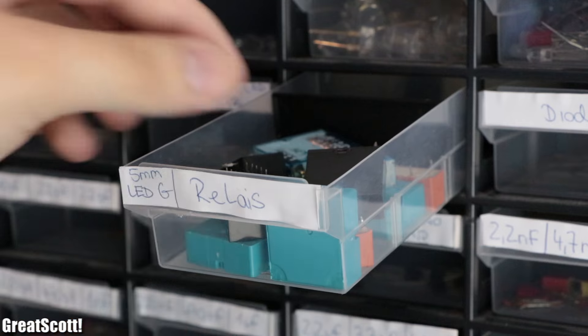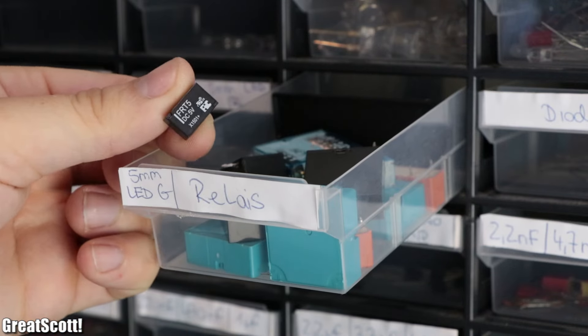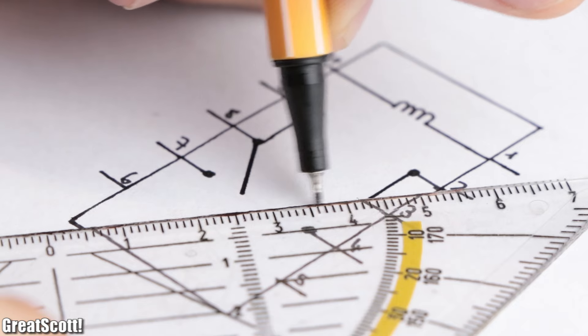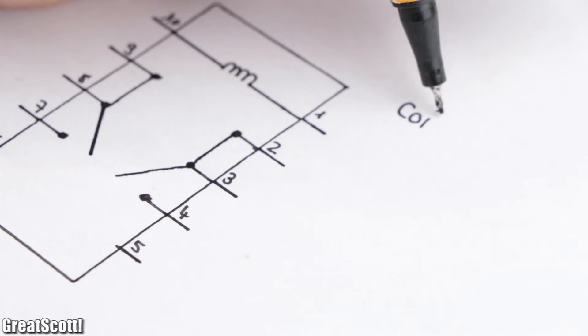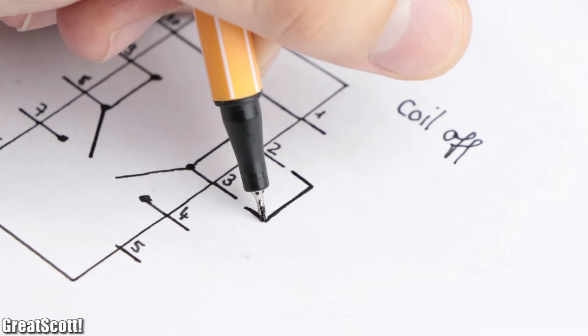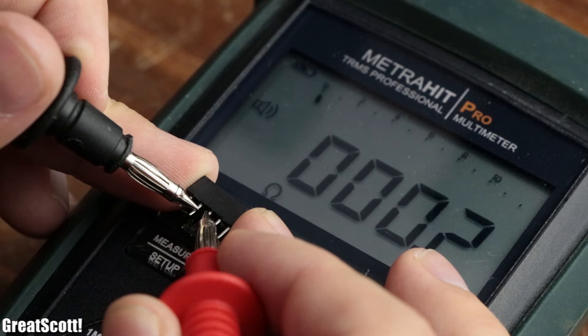The first component we need for the circuit is a relay, in my case the FRT 5, which consists of a coil and two changeover contacts. That means that when no voltage is applied to the coil, pin 3 and 2 and pin 8 and 9 are connected to one another.